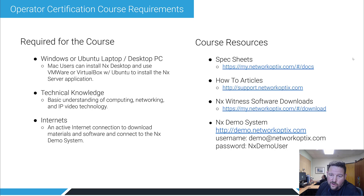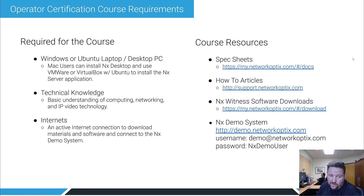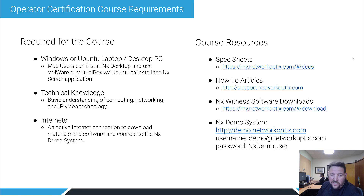There are some things you'll need to complete this course. One is a Windows or Ubuntu laptop or desktop PC. Mac users, you can install the NX desktop, and you can use VMware or VirtualBox with Ubuntu to install the server application, but you can't install the server directly on a Mac. You'll also need some basic technical knowledge — how computers work, how networking works generally, and some grasp of how IP video technology works, though we'll go over a lot of the technologies as we use them.